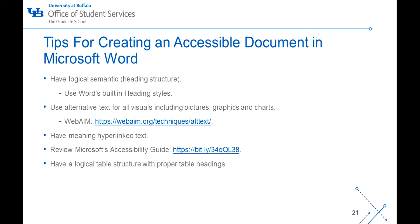A helpful website for alternative text is WebAIM. Alternative text should be accurate and equivalent in presenting the same content and function of the image, be succinct and not redundant, and not use phrases such as "image of" or "table of." Third, have meaningful hyperlinked text — this means instead of inserting a web address, hyperlink text that describes where the link will take the reader. For the purposes of this presentation, we have listed out the web addresses since they are not clickable in the video. Fourth, review Microsoft's accessibility guide, which is a helpful tool in making your document accessible. Finally, have a logical table structure with proper table headings.